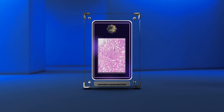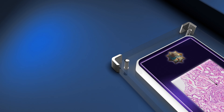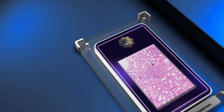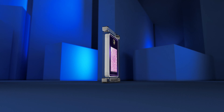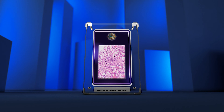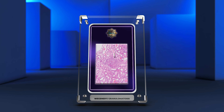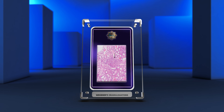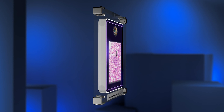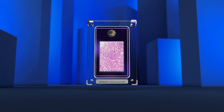Wegner's granulomatosis, also known as granulomatosis with polyangiitis, is a rare autoimmune disorder affecting blood vessels. This video explores pathogenesis, clinical presentation, diagnosis, management, and complications, aiming to equip medical students with comprehensive knowledge for effective patient care.